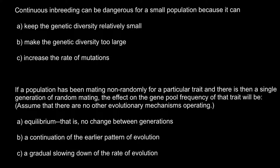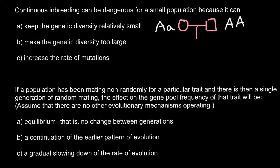Imagine a situation where we have a female and a male. The female genotype would be capital A and small a, and the male genotype would be capital A, capital A. So this recessive allele would be defective, but because it is recessive, the phenotype of this female would be normal.